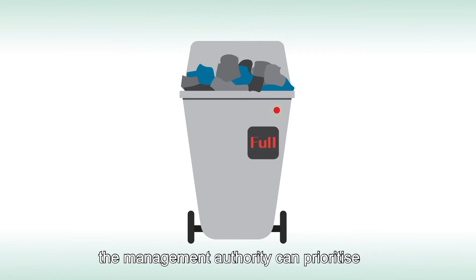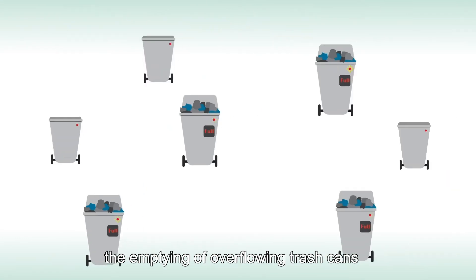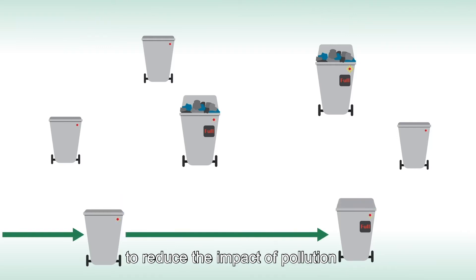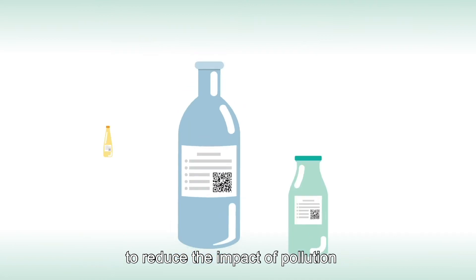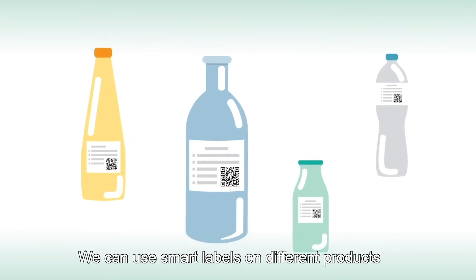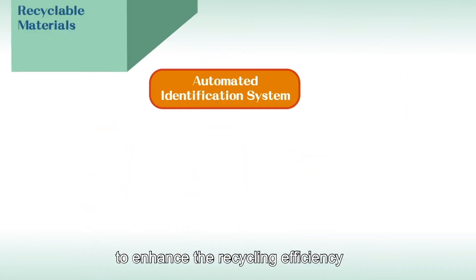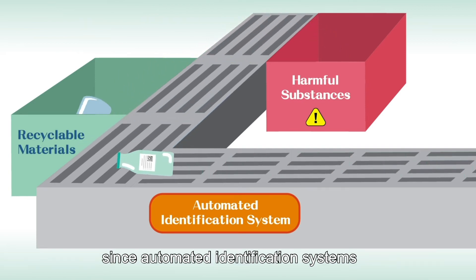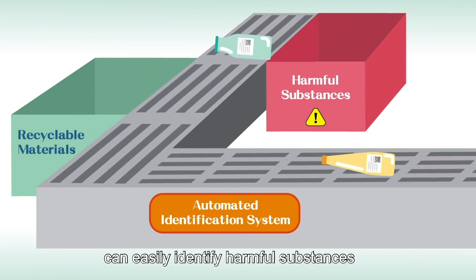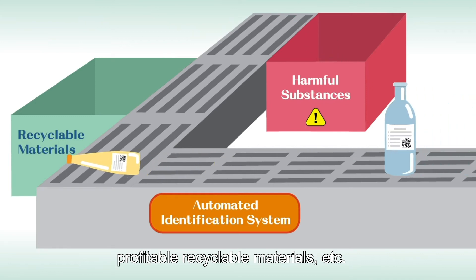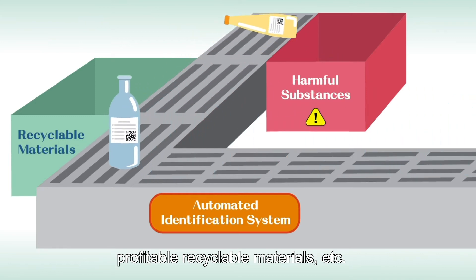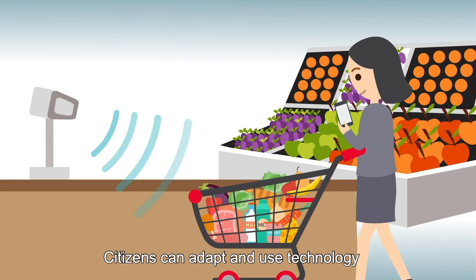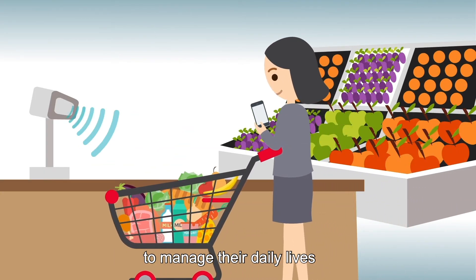Smart environment: through the use of sensor-equipped street trash cans, the management authority can prioritize the emptying of overflowing trash cans along the collection routes to reduce the impact of pollution. We can use smart labels on different products to enhance recycling efficiency, since automated identification systems can easily identify harmful substances, profitable recyclable materials, etc.